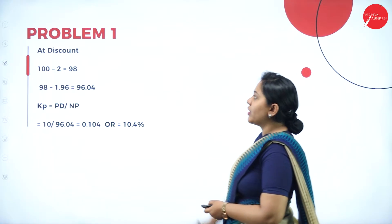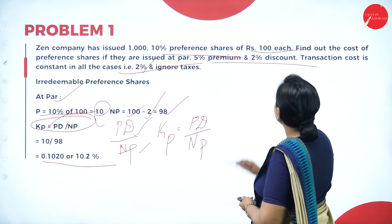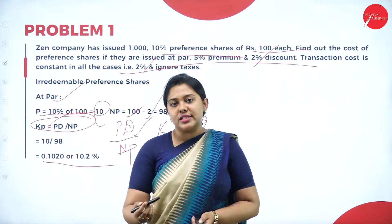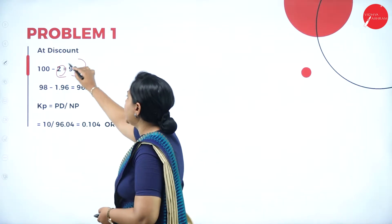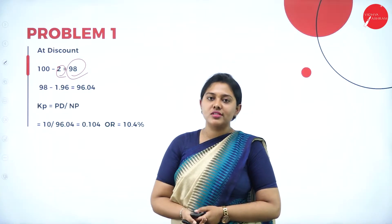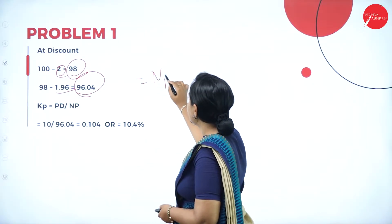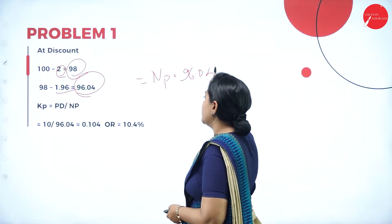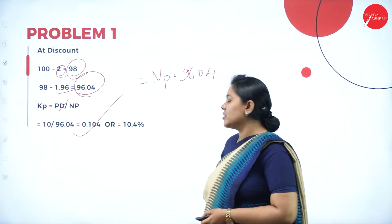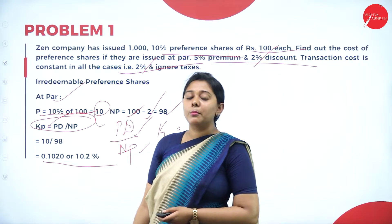Next, issued at a discount. The only change is the discount. When issuing at a discount, 100 into 2% gives a net proceeds of Rs. 98. On that Rs. 98, taking the transaction cost of 2%, you get 1.96. Net proceeds will be 96.04. Preferential dividend remains the same: 10 divided by 96.04 gives 10.4%. This is the calculation for irredeemable preference shares.